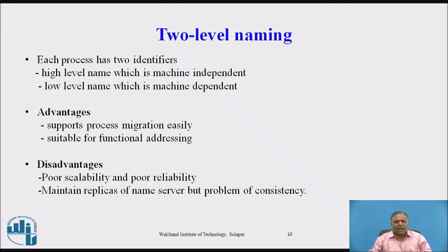Two-level naming is used to achieve location transparency in process addressing. Each process has two identifiers: a high-level name which is machine-independent, and a low-level name which is machine-dependent. A name server maintains a mapping table to map high-level names of processes to their low-level names. The sending kernel also caches high-level to low-level name mappings for further use, so the name server need not be contacted every time. Advantages: supports process migration easily and is suitable for functional addressing using high-level names to identify services. Disadvantages: poor scalability and poor reliability due to the centralized component. Maintaining replicas of the name server introduces a problem of consistency.